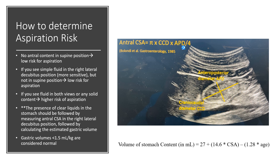If you see only clear liquids, estimate the gastric volume by first measuring the cross-sectional area of the antrum at the level of the aorta. It's important to measure at the level of the aorta rather than the IVC — because of the funnel shape of the antrum, measuring at the IVC level will underestimate gastric volume and lead to false negatives. The equation for antral cross-sectional area is: π × (cranial-caudal diameter) × (anterior-posterior diameter) ÷ 4.